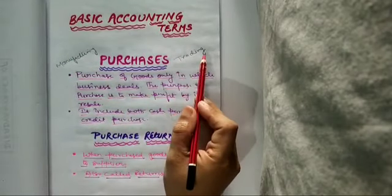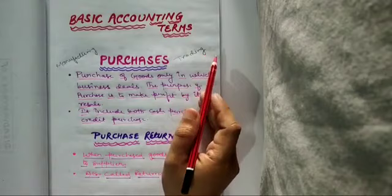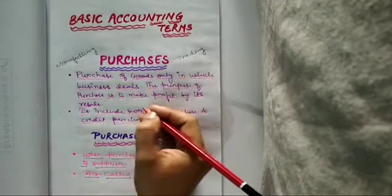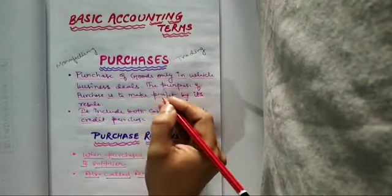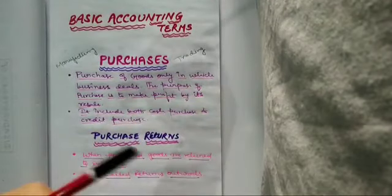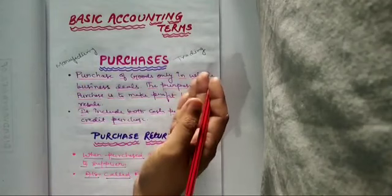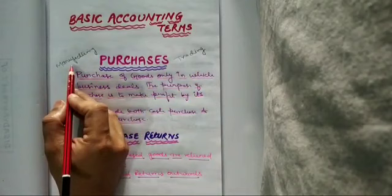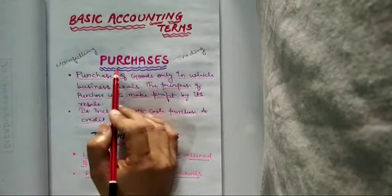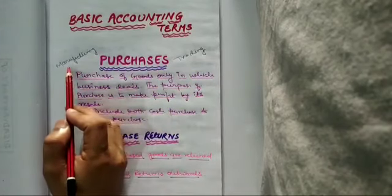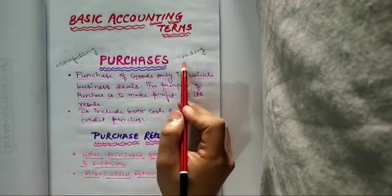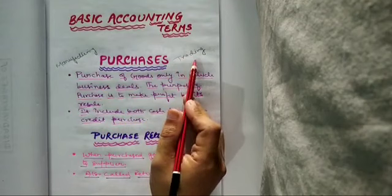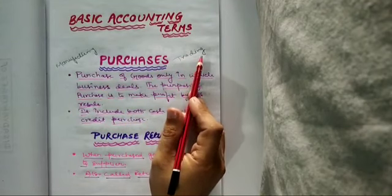And trading concern or trading business, so that is called the goods. So in manufacturing business, purchases means the purchase of raw material, whereas in trading business, purchases means the goods which are purchased for resale.